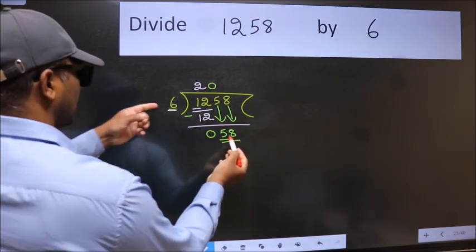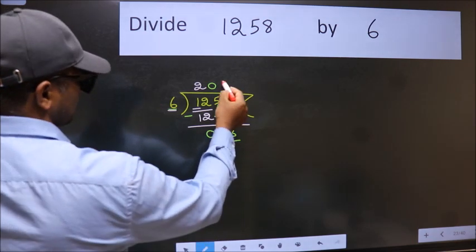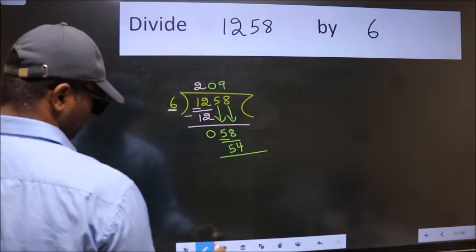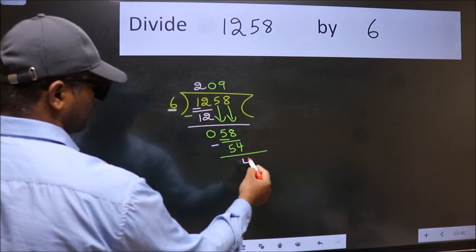A number close to 58 in 6 table is 6 nines, 54. Now, we subtract. We get 4.